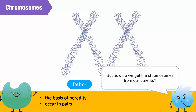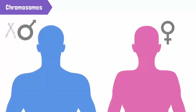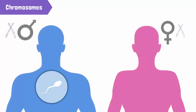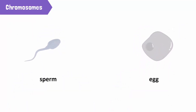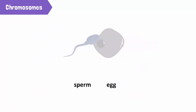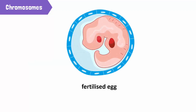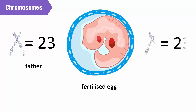But how do we get the chromosomes from our parents? Chromosomes that come from the father are in the sperm, and chromosomes that come from the mother are in the egg. During fertilization, the sperm and the egg fuse together. A new individual grows from this fertilized egg, with 23 chromosomes from the father and 23 from the mother.